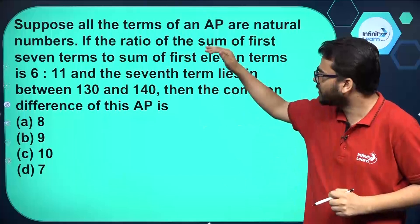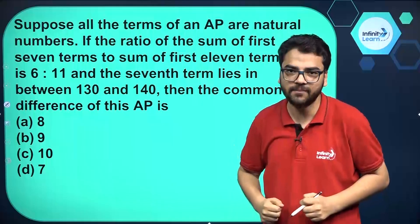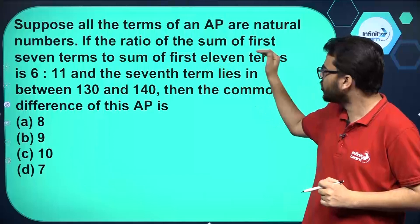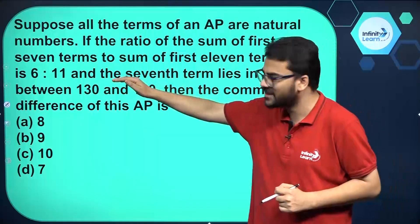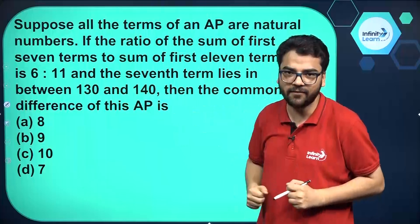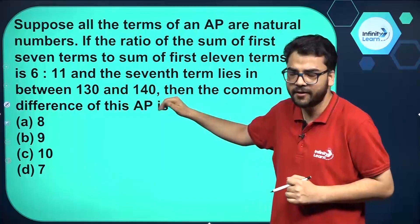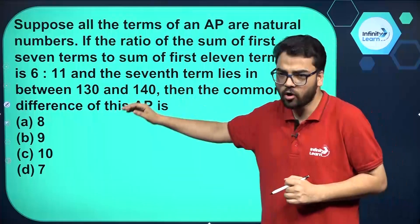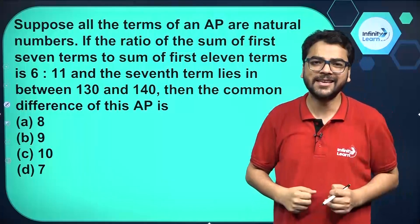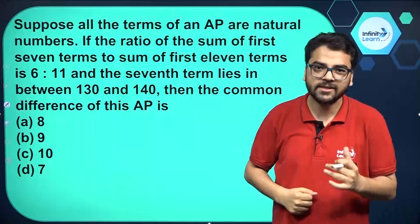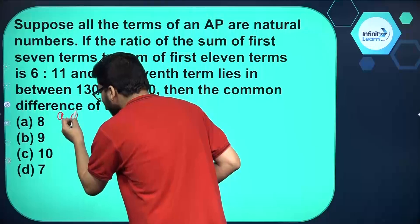We have been given an arithmetic progression in which all the terms are natural numbers. It is given that the ratio of the sum of the first 7 terms to the sum of the first 11 terms is 6 to 11, and the 7th term lies between 130 and 140. We have to find the common difference out of the given options. Since nothing specific is given, let us assume the first term is a and the common difference is d.